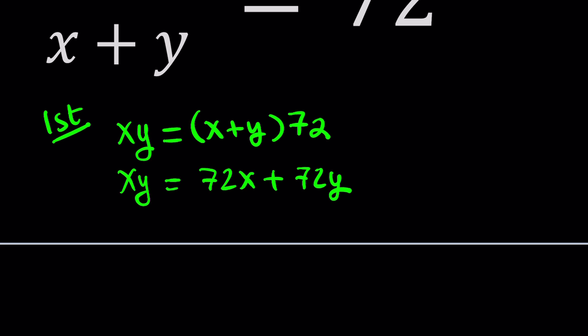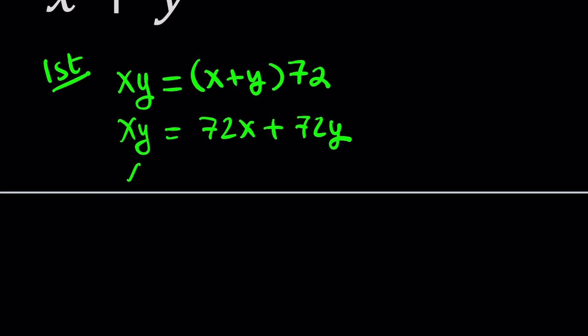Well, there's a really cool method called Simon's favorite factoring trick, which is also abbreviated as SFFT, or I just call it Simon. Here's how it goes. I'm going to subtract everything on the right hand side, and that sets everything equal to zero.